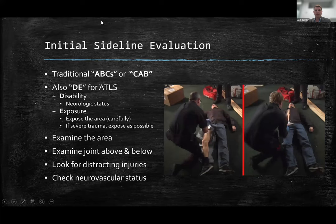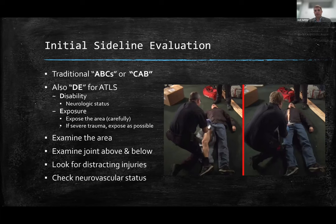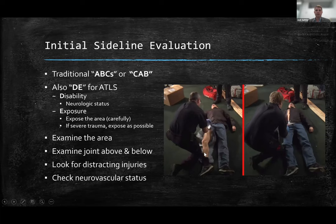What happens in the initial sideline evaluation? For those that have taken ATLS, you understand the ABCDEs. I highly recommend it. I work up at the Winter Park Ski Clinic, which is where most of these pictures and videos come from, and ATLS is really important — even if you don't see this stuff that frequently. The D and E in the ATLS evaluation is for disability and exposure: really looking at the area of interest, making sure you see the joint above and below, making sure there are no distracting injuries, and assessing neurovascular status. Obviously the ABCs come first, but D and E can be really important for risk of limb loss.